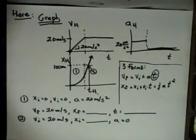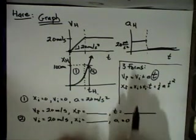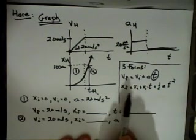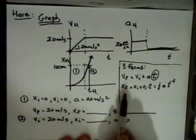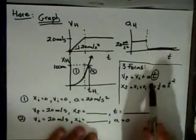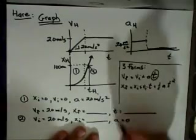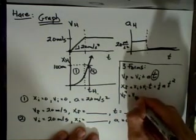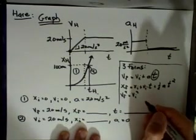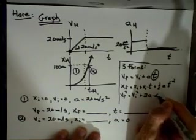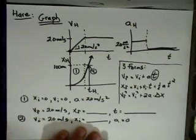The third form that is commonly used, which I believe we can also use in this case, relates not final positions and times, doesn't relate positions and times, but it relates velocities and positions without reference to time. And that's often very useful if you want to skip the step of having to solve for the time. That one reads that the final velocity squared equals the initial velocity squared plus twice the acceleration times the change in the position.